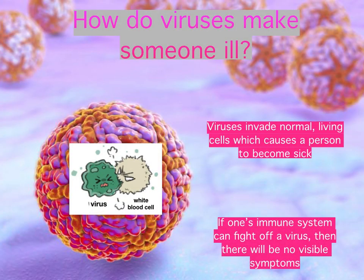Viruses invade normal living cells and use them to produce viruses like themselves. They then kill, damage, and change one's healthy cells into cells that can cause a person to become sick. Symptoms of viral infections include coughing, fever, vomiting, and fatigue. But if one's immune system can fight off a virus, then there will be no visible symptoms.